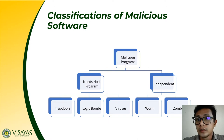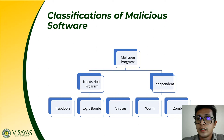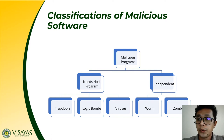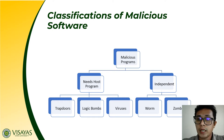There are different classifications of malicious software. Firstly, you can classify malicious software as either independent or needing a host program. If a malicious software needs a host program, it means that it cannot stand on its own and cannot execute itself unless it attaches to programs or files. Examples of malicious software that needs a host program are trapdoors, logic bombs, viruses, and Trojan horses.